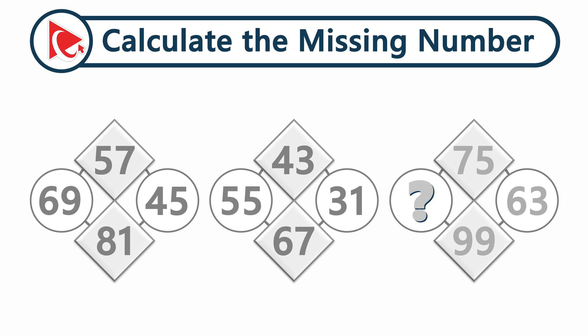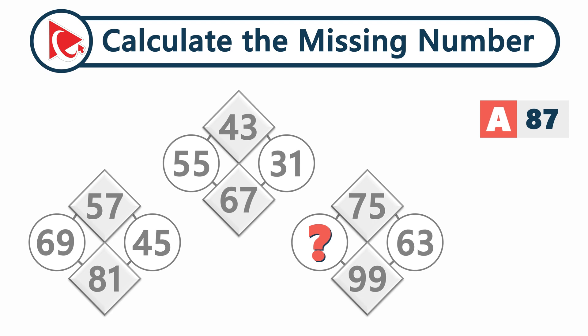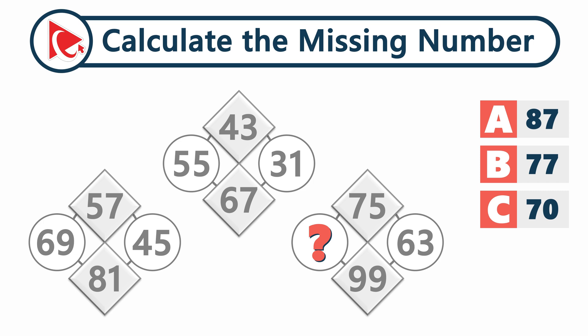The third shape only has 3 numbers visible: 75, 63, and 99. The fourth number is missing — this is the number you need to calculate and select your answer out of 4 possible choices. Choice A: 87. Choice B: 77. Choice C: 70. And last but not least, choice D: 63.